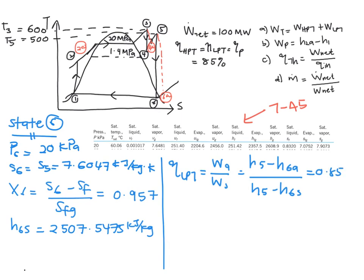You plug in the value of H6s into this equation and the previous H5 that you got, and you rearrange this mathematically. You will obtain H6a equals 2265.635 kJ per kg.